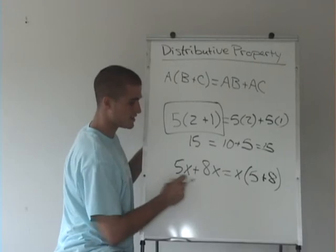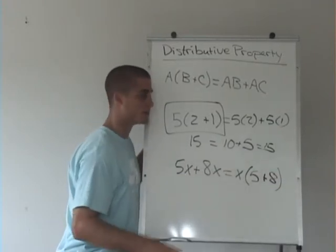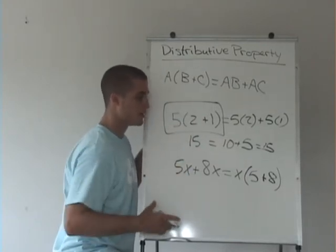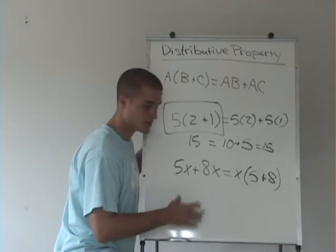So we just factored an x out, and this is going to be equal to this side. We can do the distributive property, or we can do the inverse of the distributive property, which we use a lot of times when we factor equations.